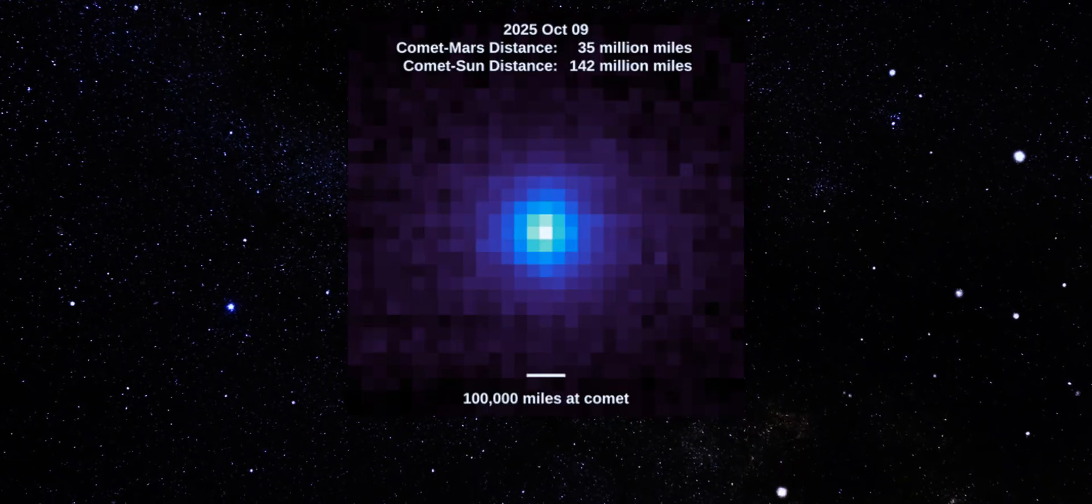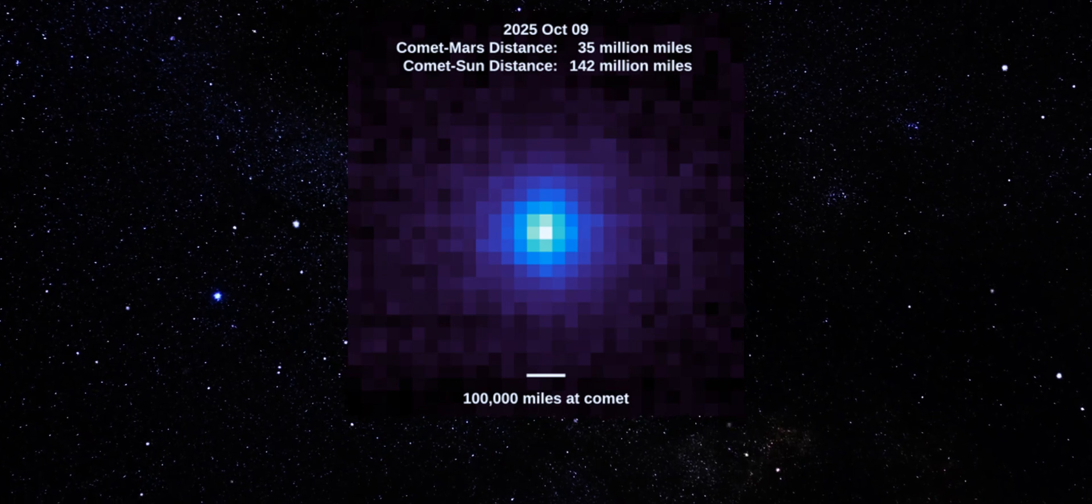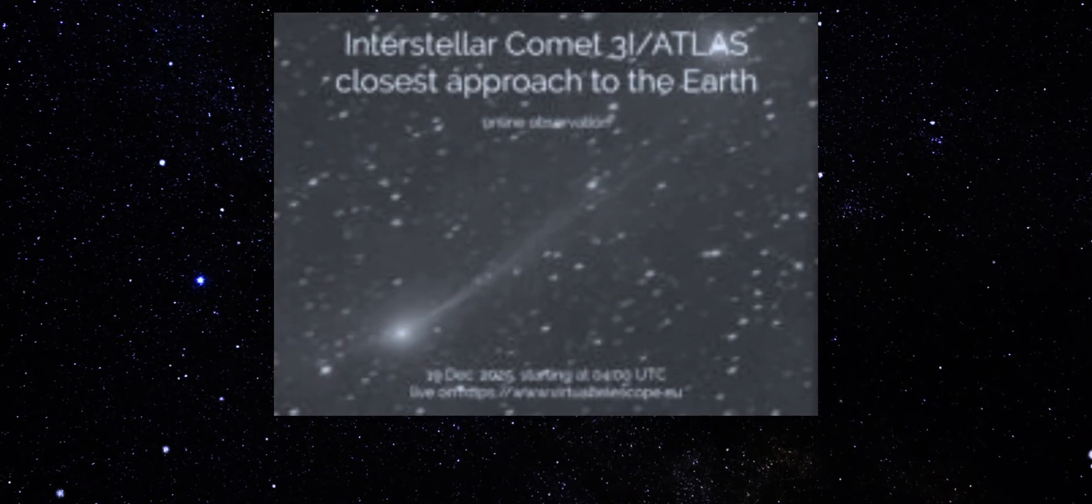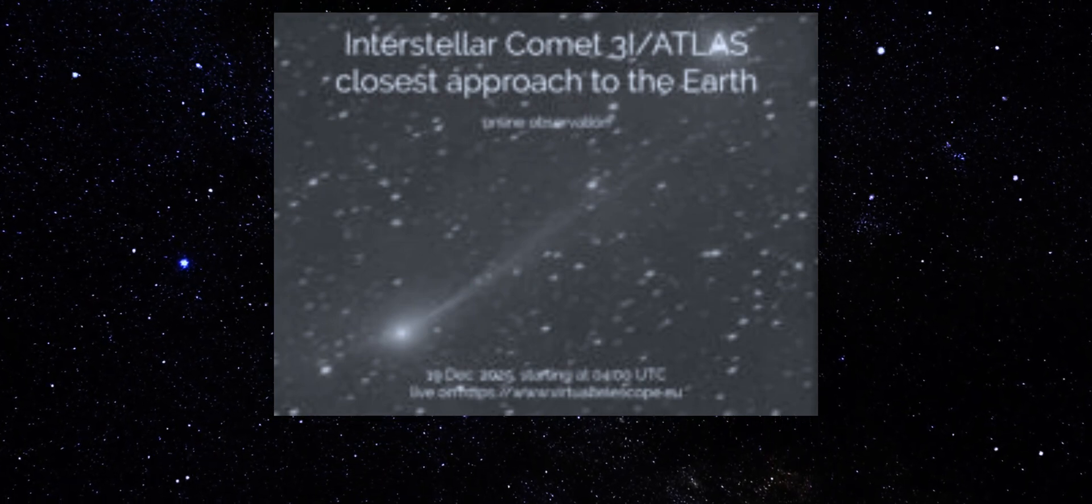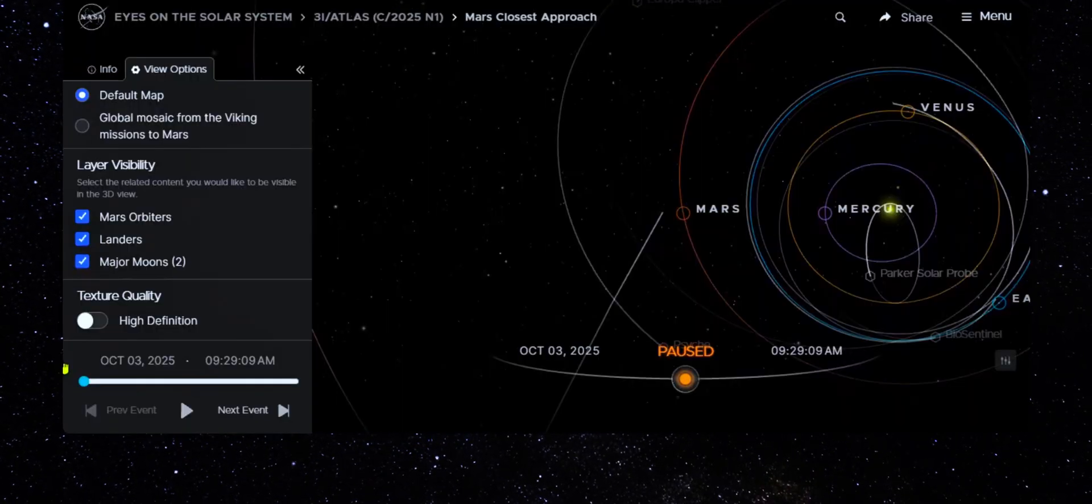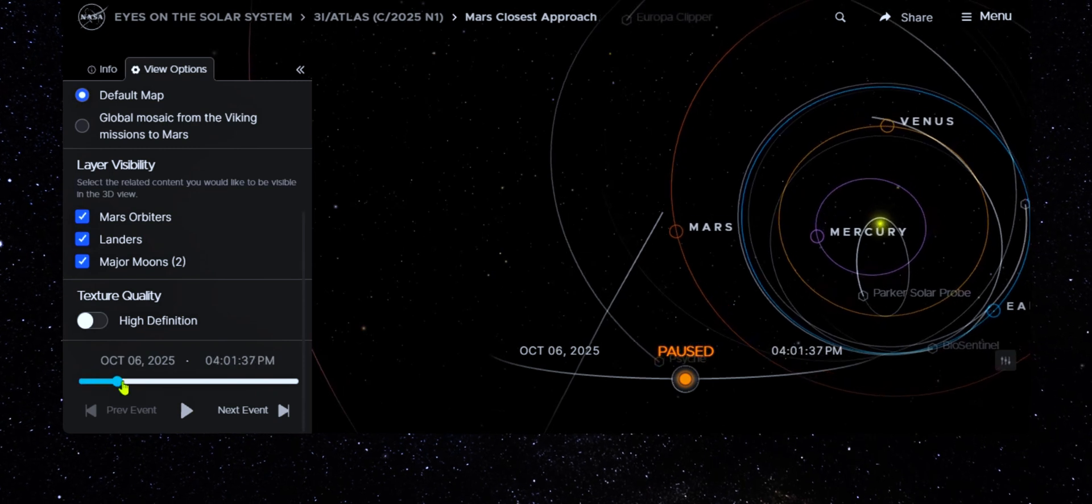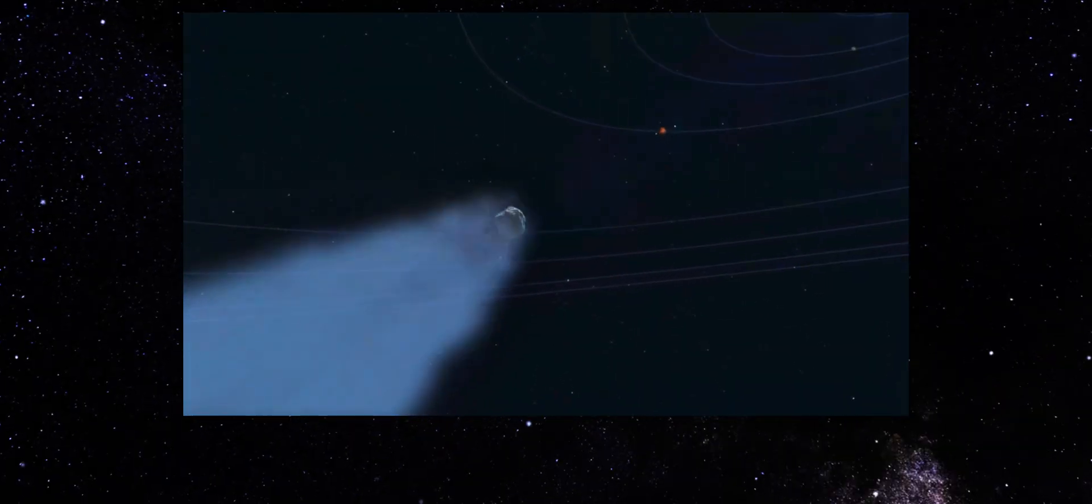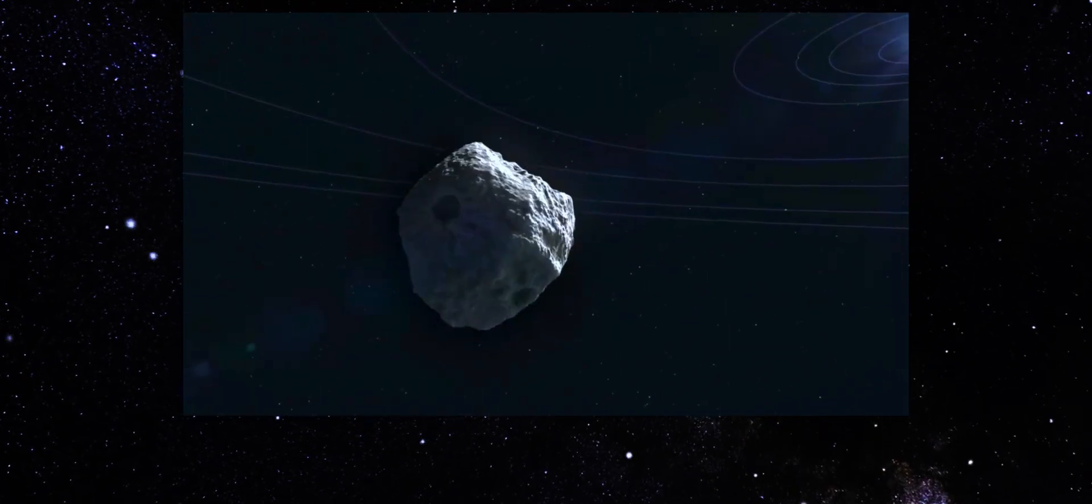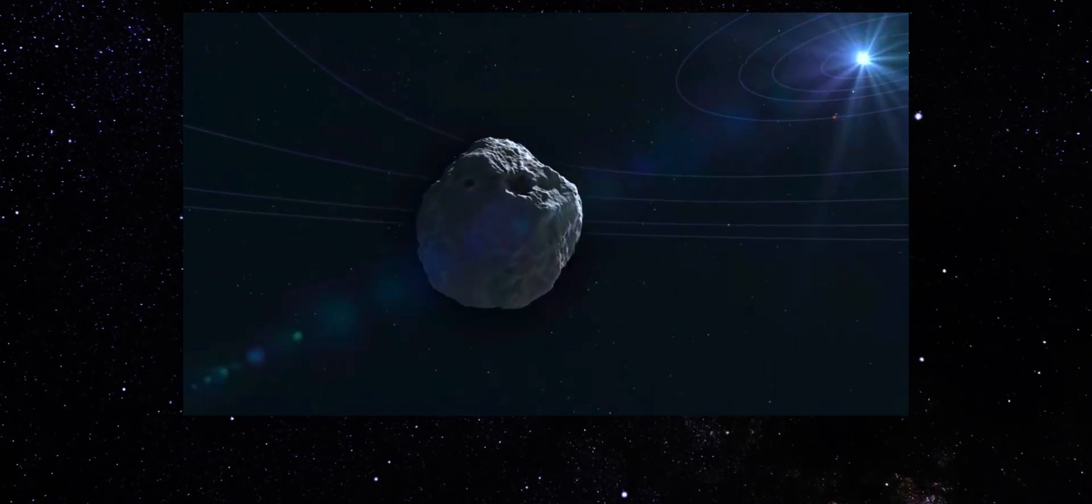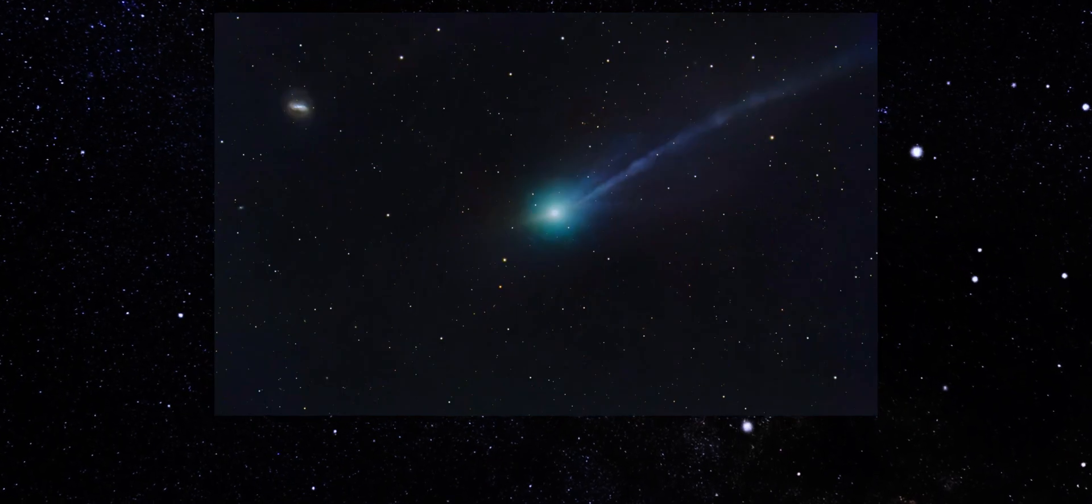Sharp, directed features instead of a slow, diffuse cloud. Borisov sits at the bottom with consistently low output. Neo-Wise sits in the middle with a textbook coma profile. And then there's 3-Eye Atlas, occupying its own category entirely. This helps explain why the new jet-like structure is appearing so clearly today. The object isn't just active, it's hyperactive compared to the only other interstellar visitor we've studied up close.